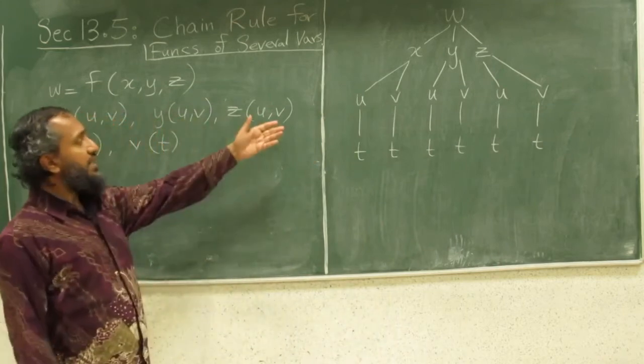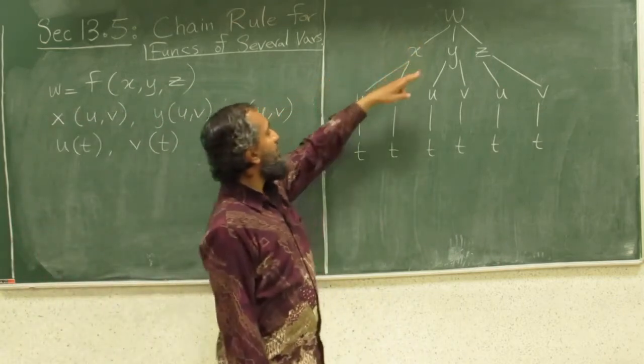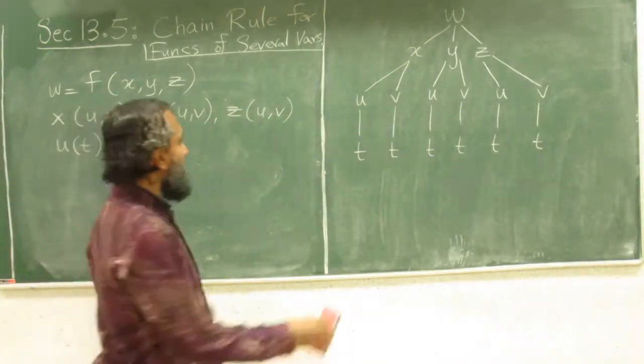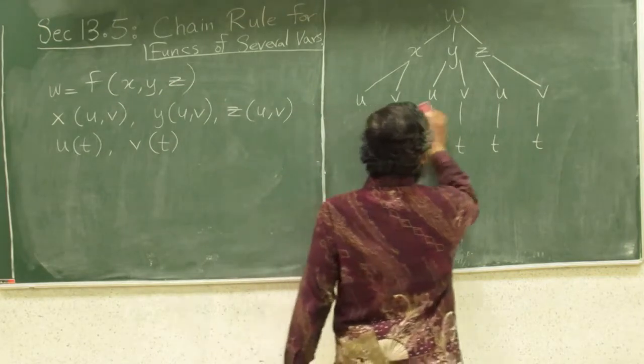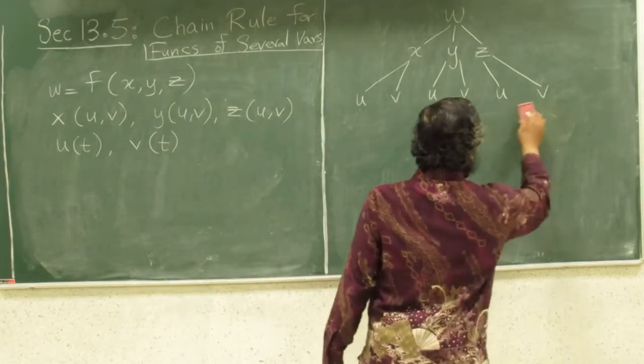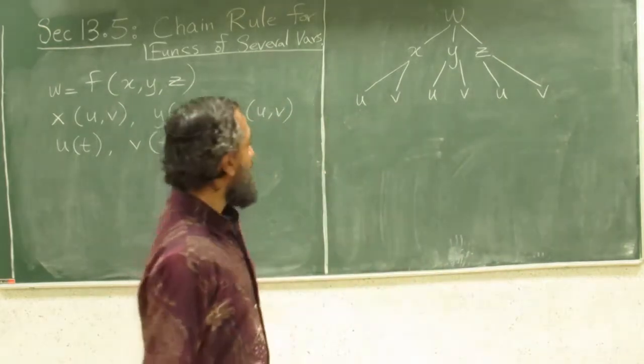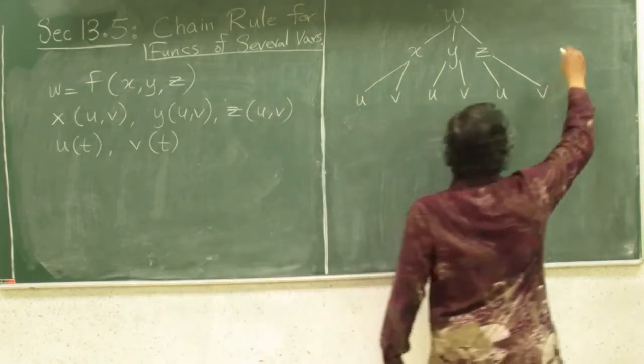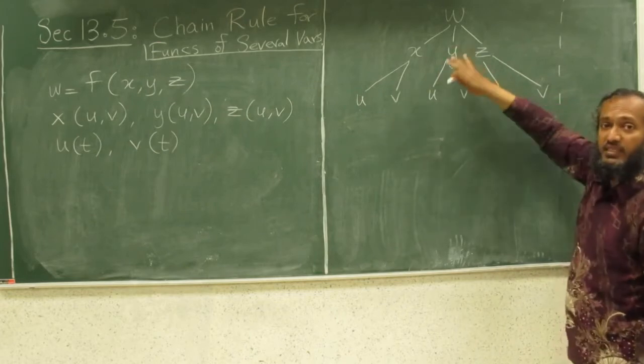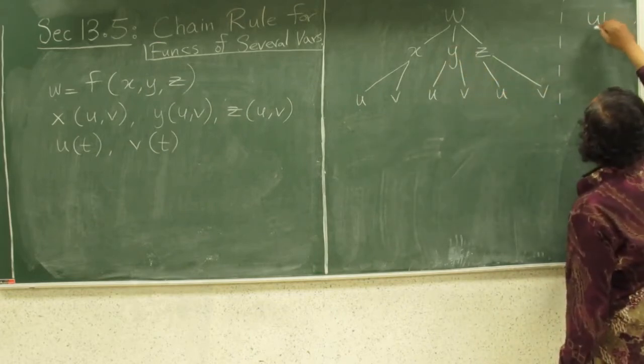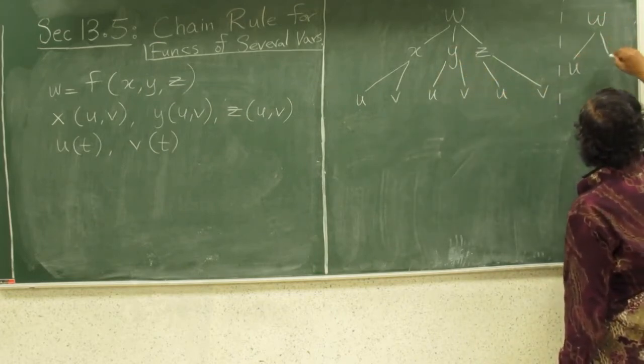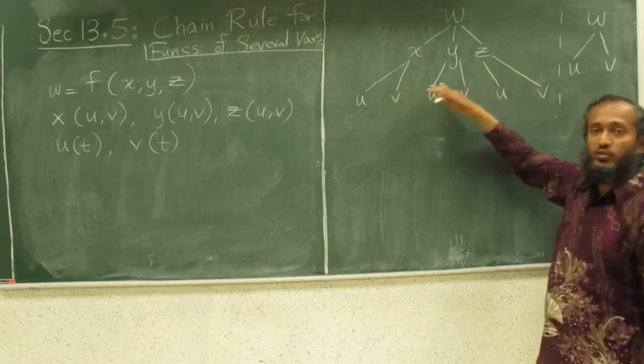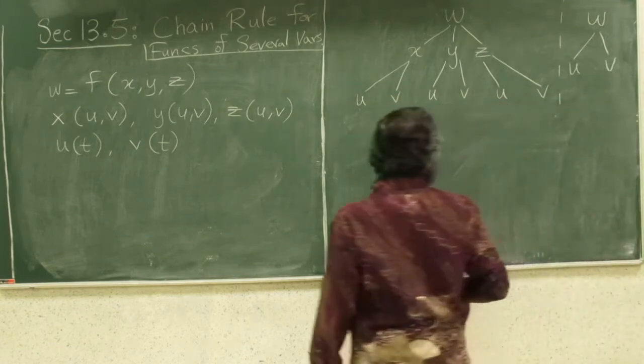Now, we could be asked any question. We could be asked the rate of change of w with respect to u's or v's. When you draw a diagram here, where you eliminate the intermediate layer, what do you have? w is a function of u and v. At this level, you have just u's and v's.